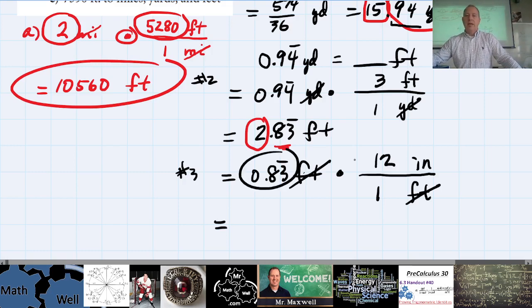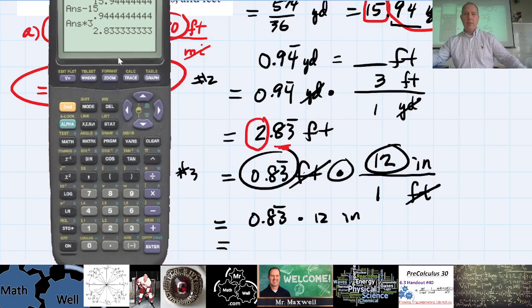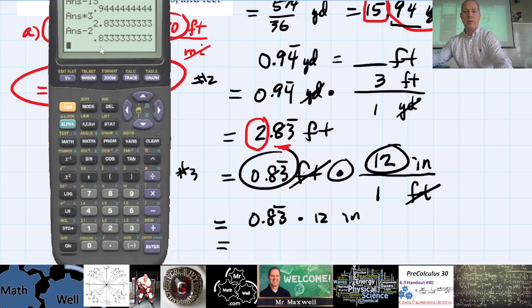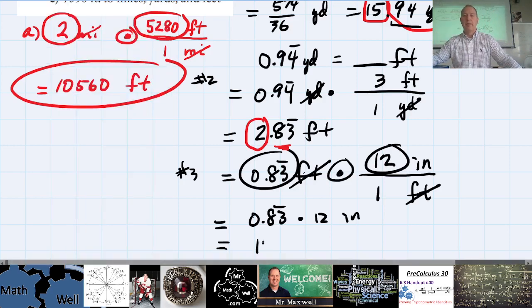So 0.8̄3̄ repeating times 12 — let's do that on the calculator. Look at that: it comes out to exactly 10. So this is 10 inches.